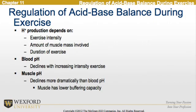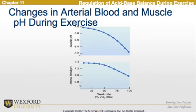Continuing with the regulation of acid-base balance during exercise, hydrogen ion production depends on exercise intensity, the amount of muscle mass involved, and the duration of exercise. Blood pH declines with increasing exercise intensity, and muscle pH declines more dramatically than blood pH, as muscles have a lower buffering capacity. Two charts represent the changes in arterial blood and muscle pH during exercise.